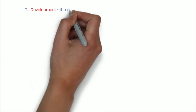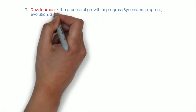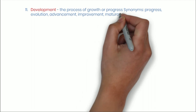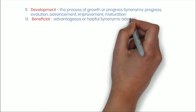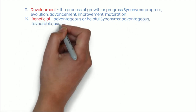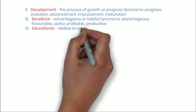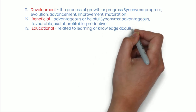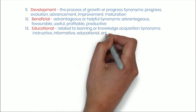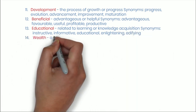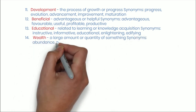Number eleven: Development — the process of growth or progress. Synonyms: progress, evolution, advancement, improvement, maturation. Number twelve: Beneficial — advantageous or helpful. Synonyms: advantageous, favorable, useful, profitable, productive. Number thirteen: Educational — related to learning or knowledge acquisition. Synonyms: instructive, informative, enlightening, edifying. Number fourteen: Wealth — a large amount or quantity of something. Synonyms: abundance, plenty, richness, copiousness, profusion.